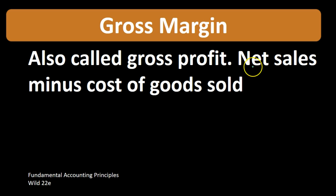Net sales — not net income — is going to be sales minus the contra sales accounts, which are returns and allowances. That's basically the sales number minus the cost of goods sold, which is the cost of the inventory that we are selling if we're a manufacturing or merchandising company.